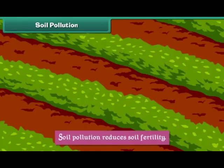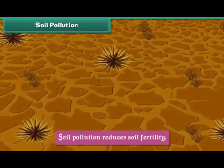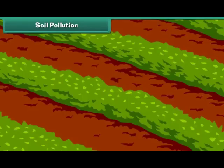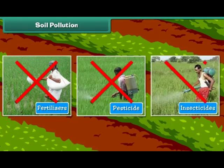Soil pollution reduces soil fertility. We can prevent soil pollution by reducing usage of fertilizers, pesticides, and insecticides.